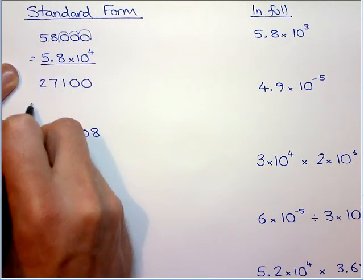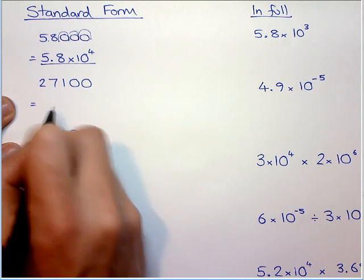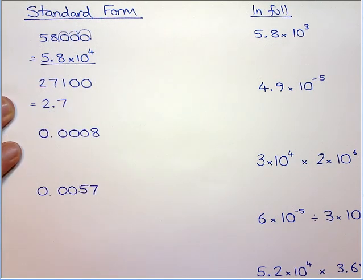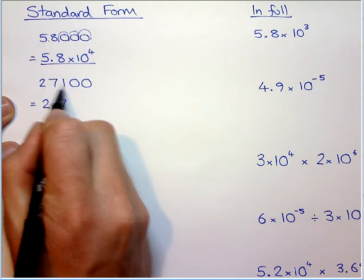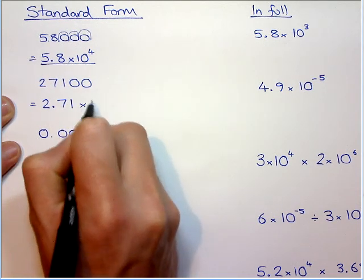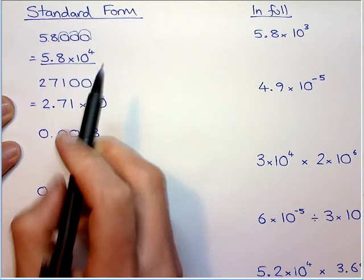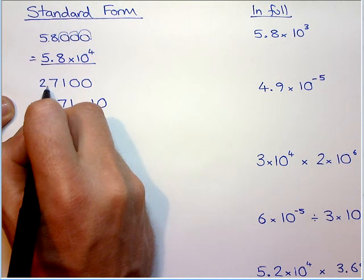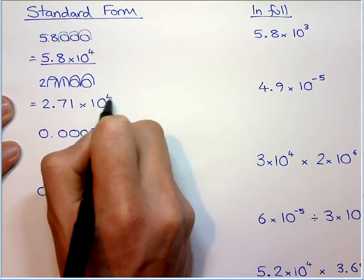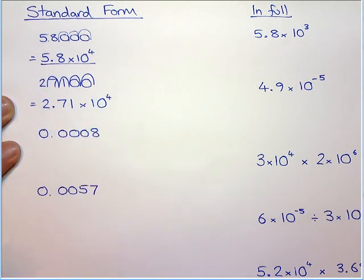So in this one, the decimal point has to be between the 2 and the 7 to make it between 1 and 10. But if there are any other numbers other than 0, we have to include it. So we don't include the 0s, basically. So if the point goes in here, we're times it by 10, 1, 2, 3, 4 times, again, to get back to the original number.